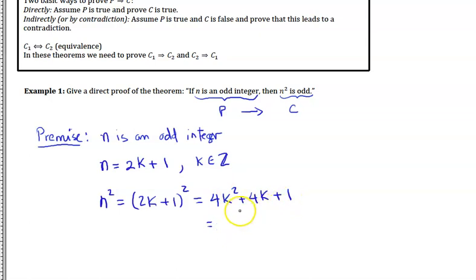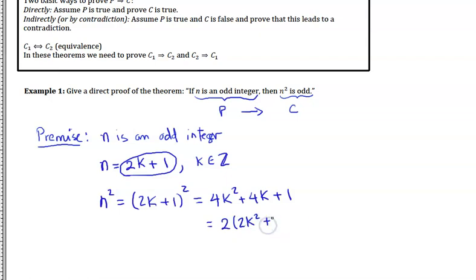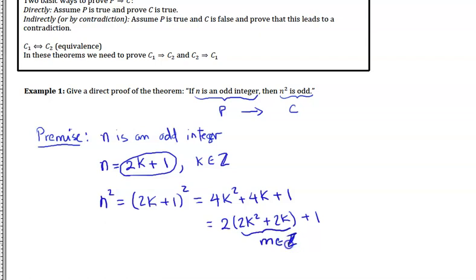This is looking promising, because an odd number takes the form 2 times an integer plus 1. I can rewrite this as 2(2K² + 2K) + 1. The only thing we need to confirm is that the expression 2K² + 2K is an integer — let's call it M.